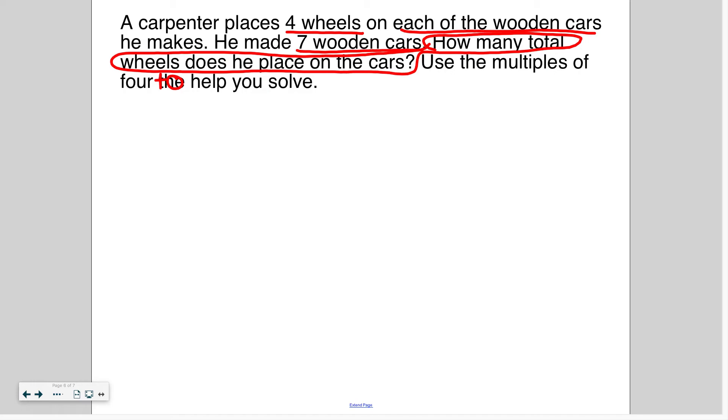Alright. So I know that the four fact that would help me solve this would be four times seven because there are four wheels in each car and there are seven cars. So if I were to draw seven cars, five, six, seven, and place four wheels on each, right? It's kind of like equal groups.